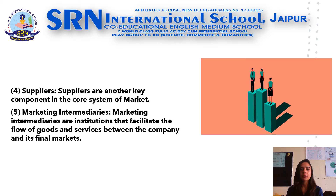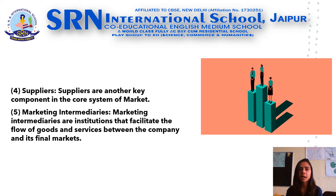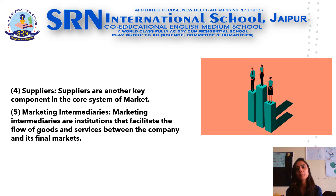Last but not least, we have marketing intermediaries. Marketing intermediaries are institutions that facilitate the flow of goods and services between the companies and their final markets. They include resellers, suppliers, transporters, warehouses, banks, and promoting agencies. These are institutions which came into being to facilitate or ease up the work of conducting exchanges in the market. They perform a great deal of work in bringing about transactions between the buyers and the sellers. The market cannot survive without these intermediaries.